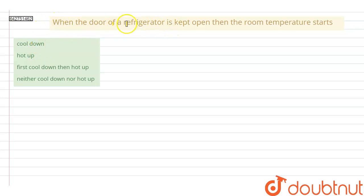We have: when the door of a refrigerator is kept open, then the room temperature starts to cool down, hot up, or first cool down then hot up, neither cool down nor hot up.